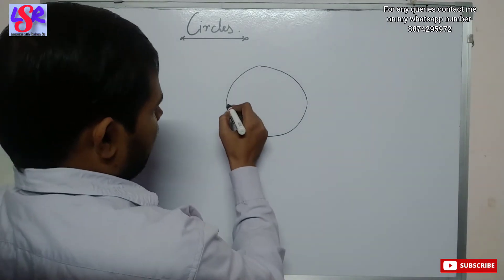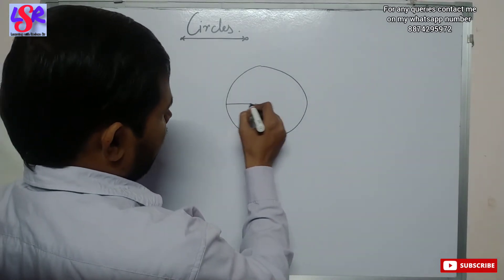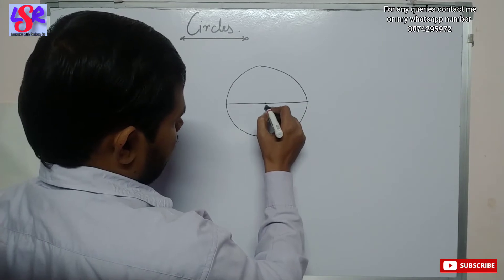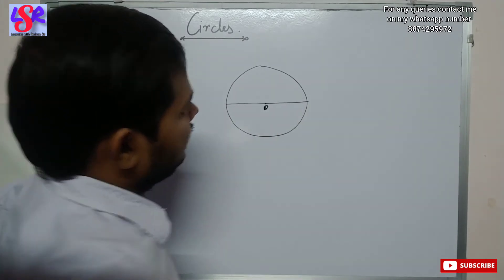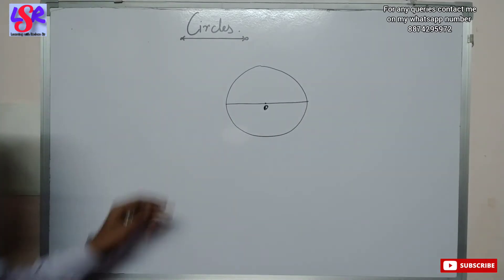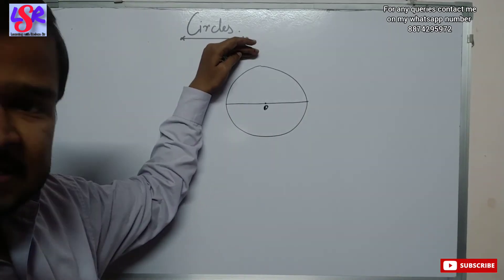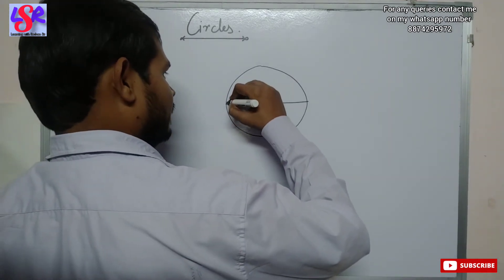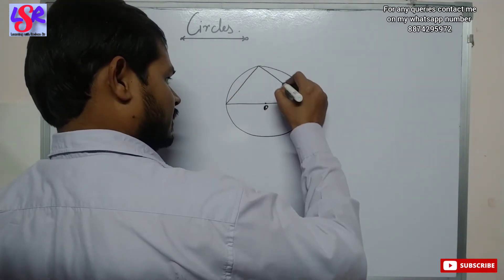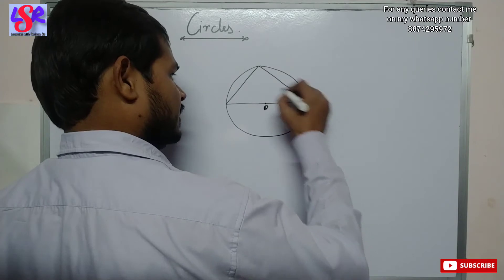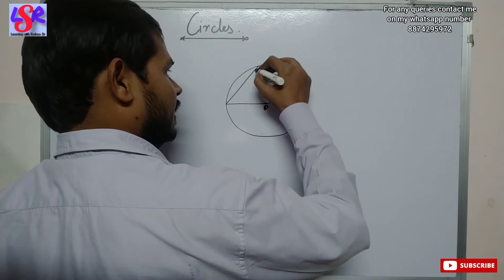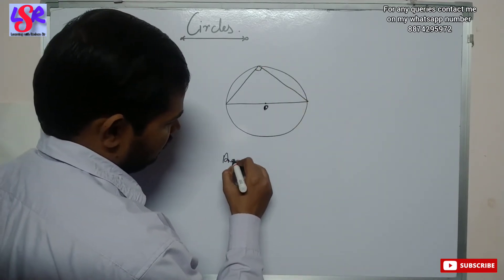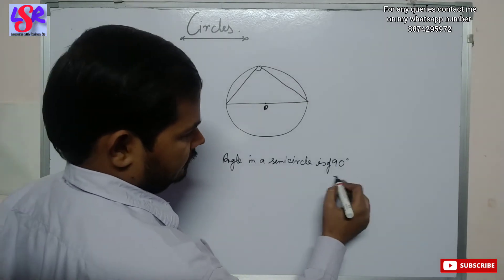If we have a diameter, then this diameter divides the circle into two equal semicircles. And if we make any angle in a semicircle, then that angle is 90 degrees. So we can say the angle in a semicircle is 90 degrees.